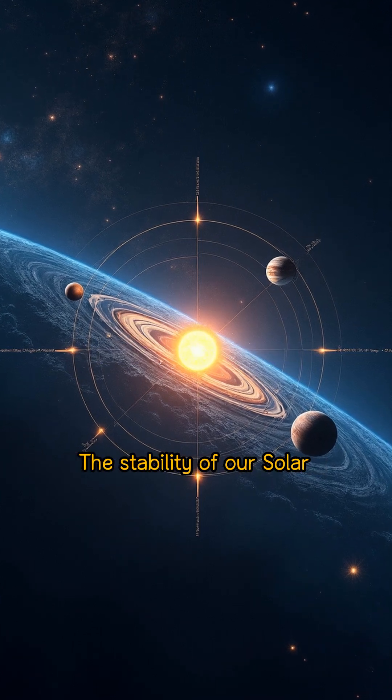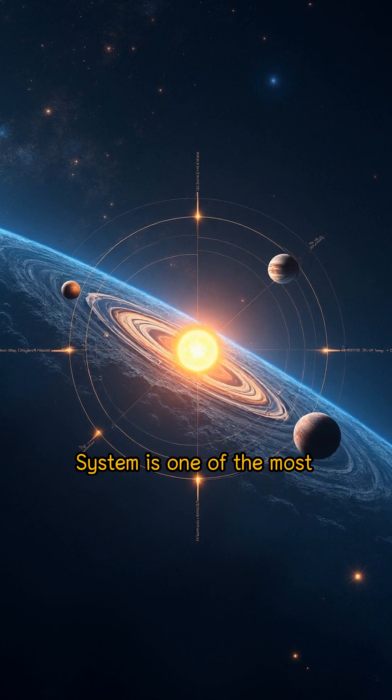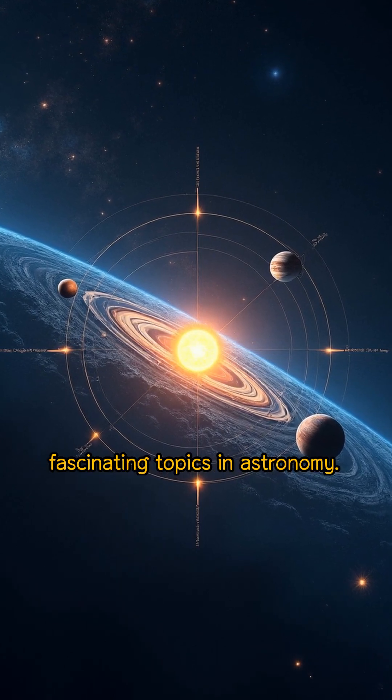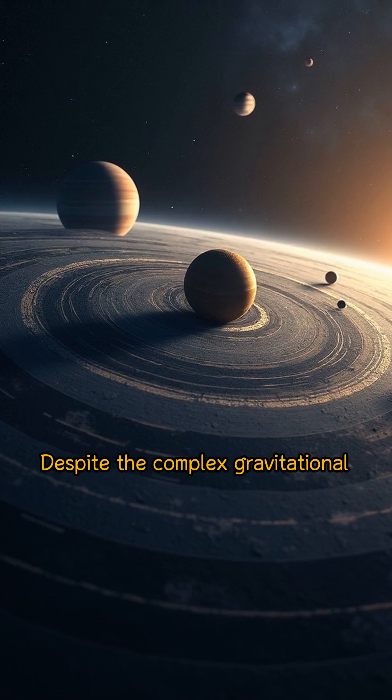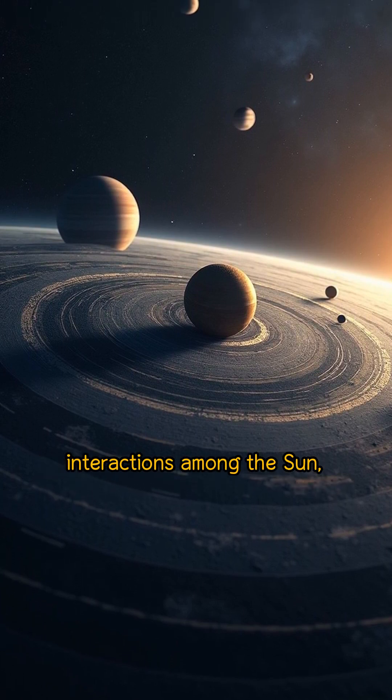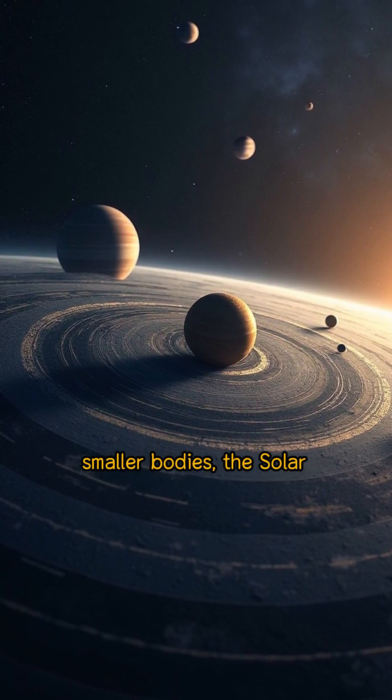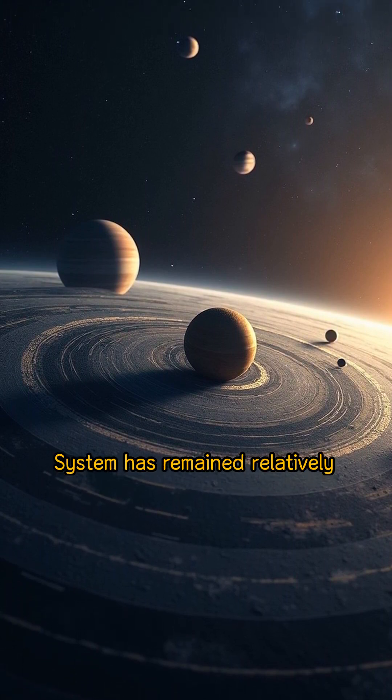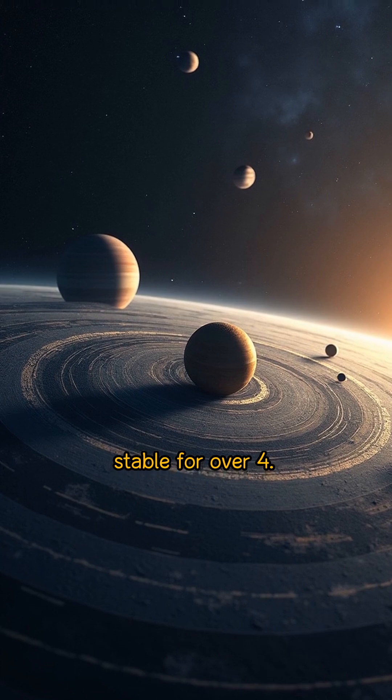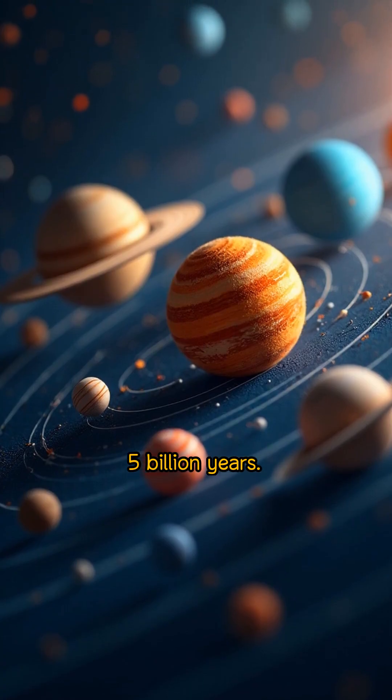The stability of our solar system is one of the most fascinating topics in astronomy. Despite the complex gravitational interactions among the sun, planets, moons, and countless smaller bodies, the solar system has remained relatively stable for over 4.5 billion years.